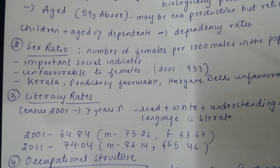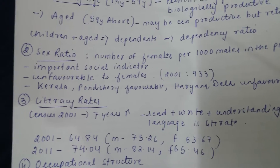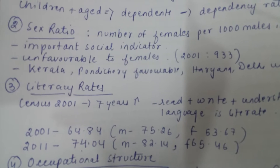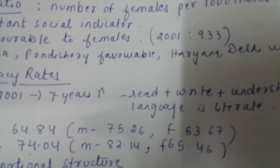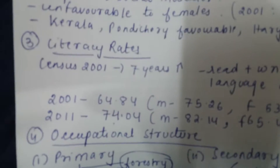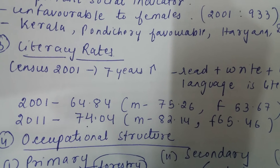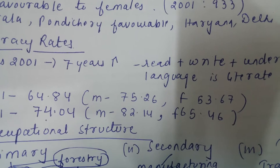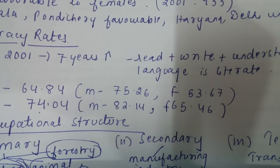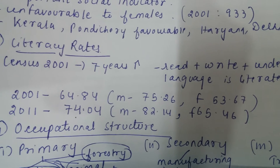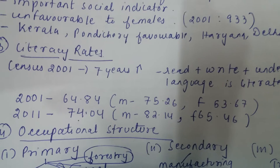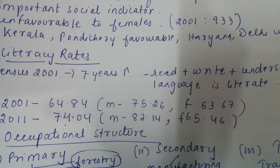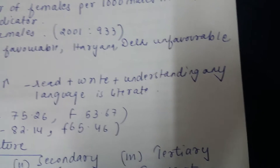Now literacy. The composition of population also includes literacy. In Census 2001, the literacy rate was 64.84%, with male at 75.26% and female at 53.67%. In Census 2011, there was a welcome change — literacy rate rose to 74.04%, with male at 82.14% and female at 65.46%. The gap between male and female literacy is still there, but it is a good trend that more people are literate. In India, literacy is defined as someone above seven years of age who can read, write, and understand any language.